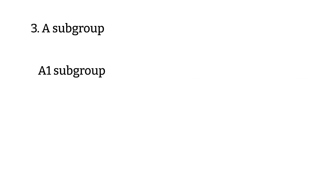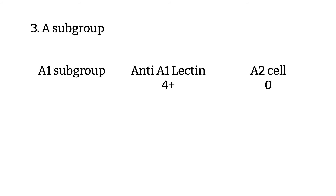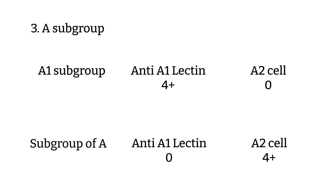You can also have an A-subgroup patient. You can confirm this by performing anti-A1-lectin and A2 cells. If the patient is A1 subgroup, then your anti-A1-lectin should show 4+ and A2 cell should be 0, or non-reactive. If your anti-A1-lectin is non-reactive and A2 cells is 4+, then you can report it out as a subgroup of A.